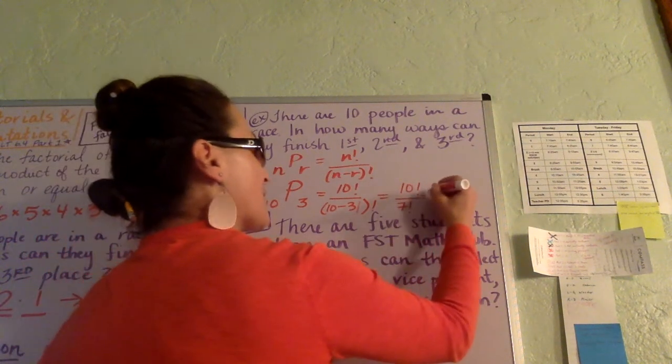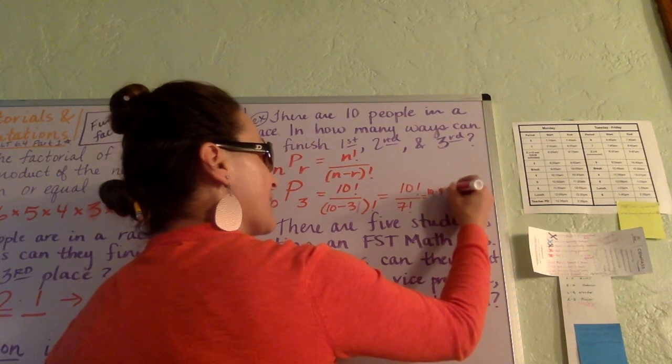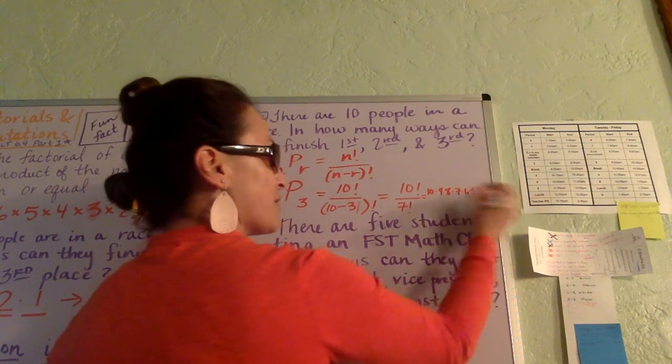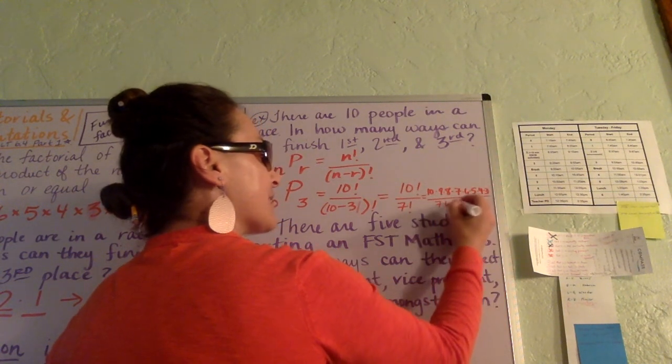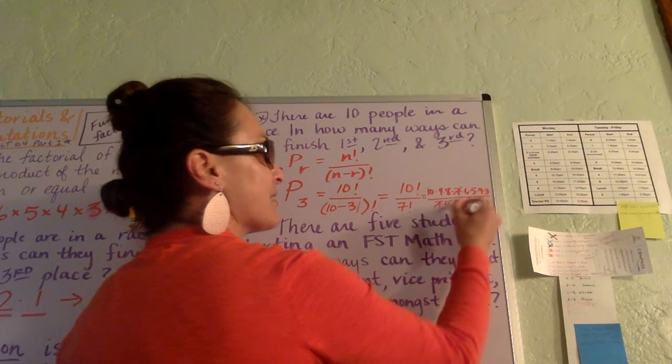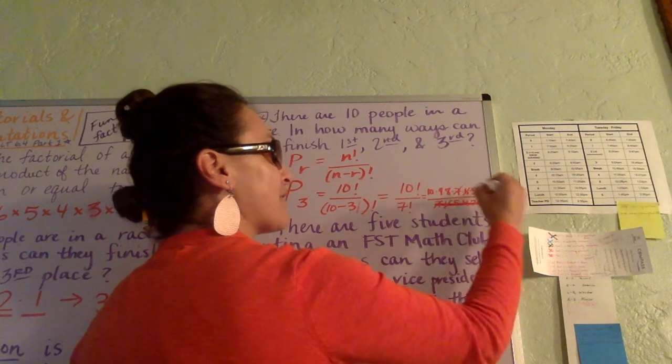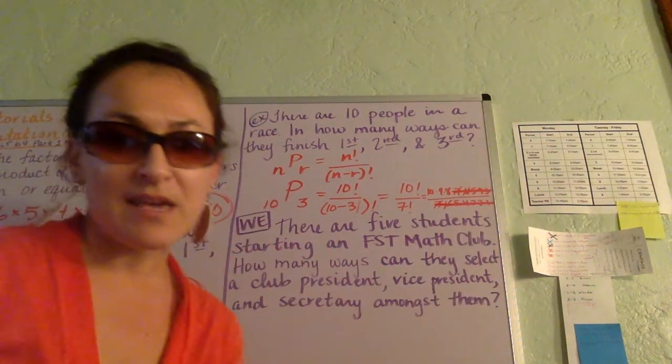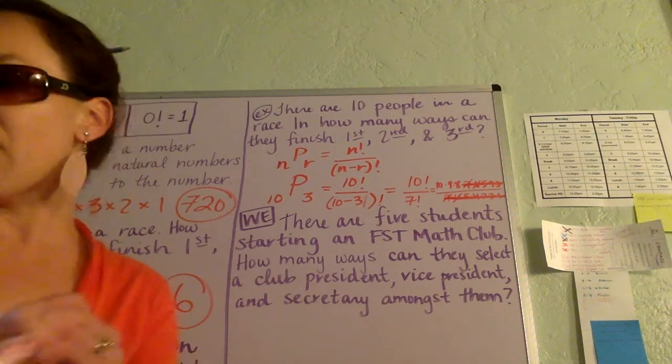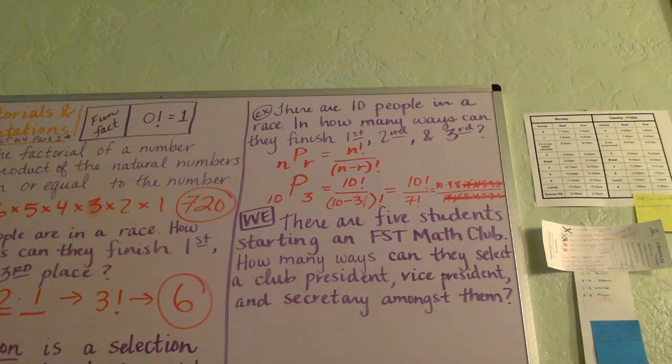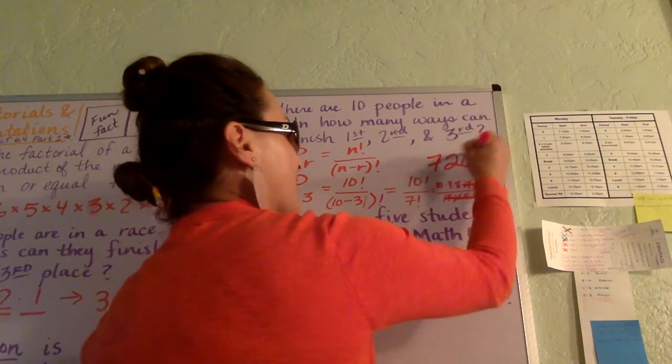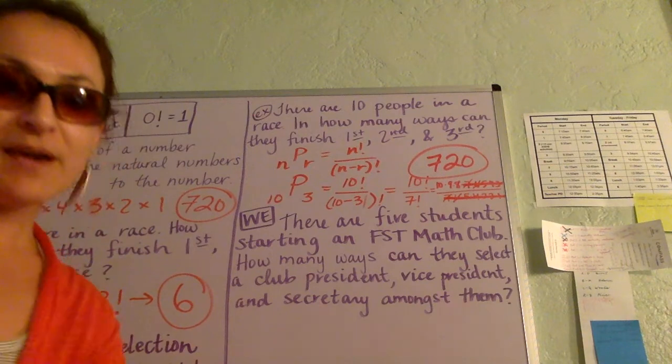I just want to write this out so you can see the whole thing. This is 10 times 9 times 8 times 7 times 6 times 5 times 4 times 3 times 2 times 1 over 7 times 6 times 5 times 4 times 3 times 2 times 1. So you can see 7 cancels with 7, 6 cancels with 6. In fact, all of this will cancel out with all of this. The answer is really just going to be 10 times 9 times 8, which hopefully that's what you were thinking already. And of course, 10 times 9 times 8 is 720.